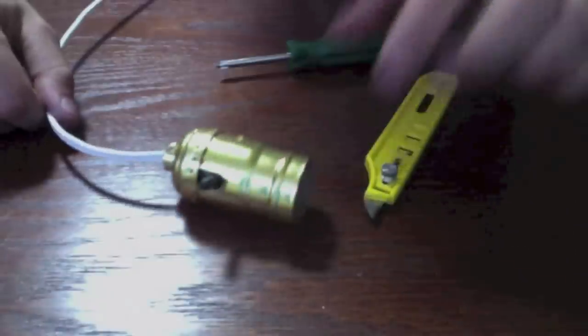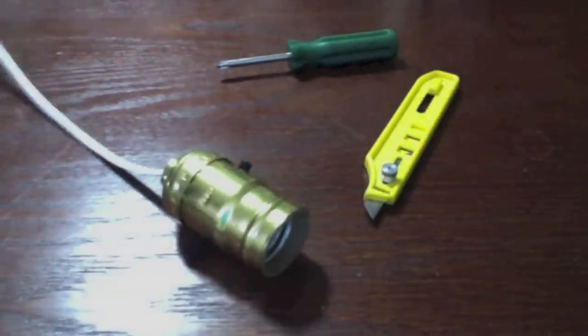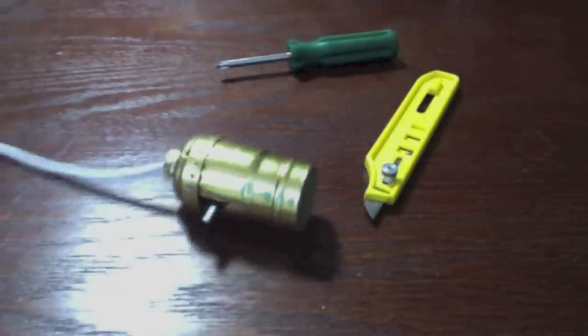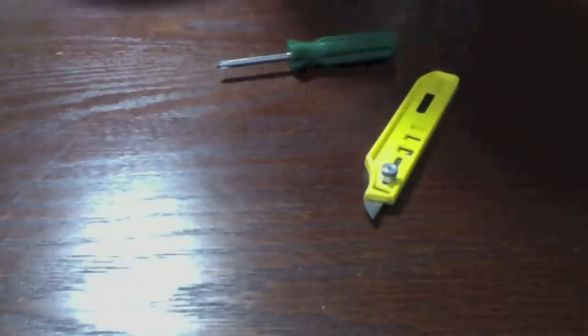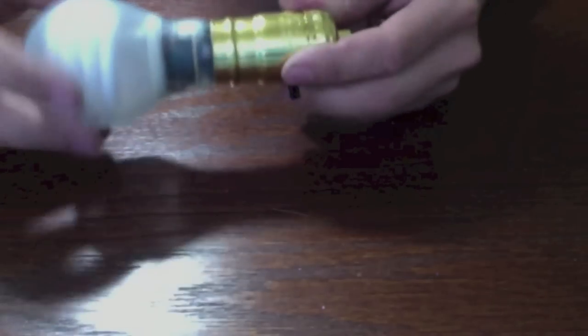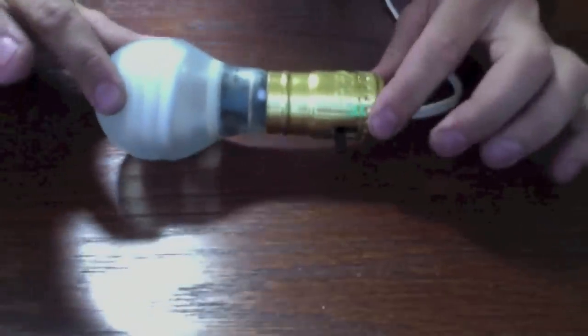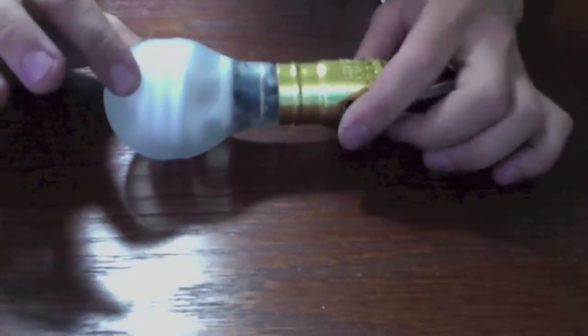So now I have my light bulb socket. It's all hooked up and connected. Go ahead and plug in my cord. And now that the cord's plugged in, I can go ahead and insert the light bulb into the socket. And as long as I did this right, the light bulb should light up when I flick the switch. Woo! There we go. We have light.